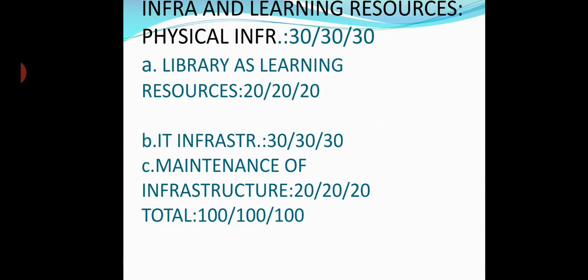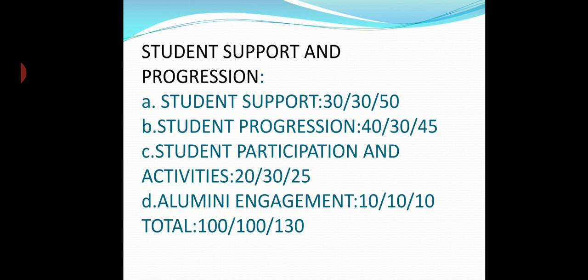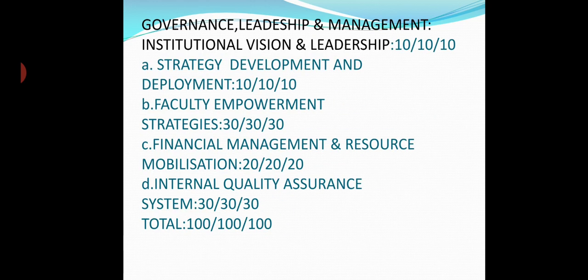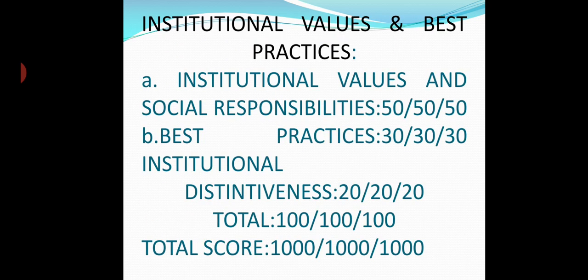Going to the fourth criteria — that is infrastructure and library — it covers infrastructure, facility, and maintenance. The next criteria is student support services, covering support services available, progression data, participation in activities, and alumni engagement. Governance and leadership covers strategy of development and deployment, faculty empowerment strategies, financial management, and internal quality assurance system. Institutional values and best practices cover social responsibility, environmental practices, and eco-friendly practices related to all the above-mentioned criteria.